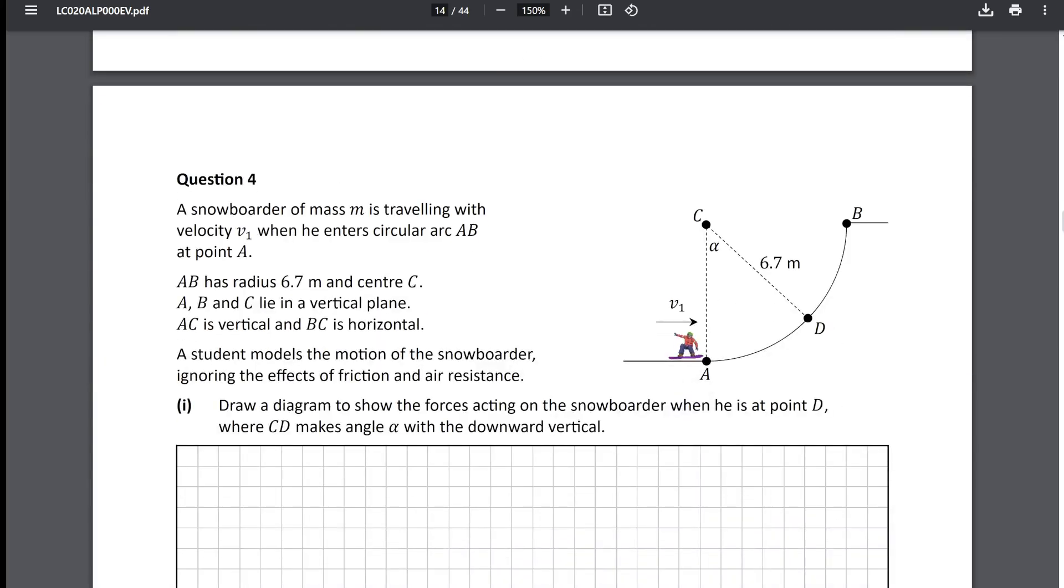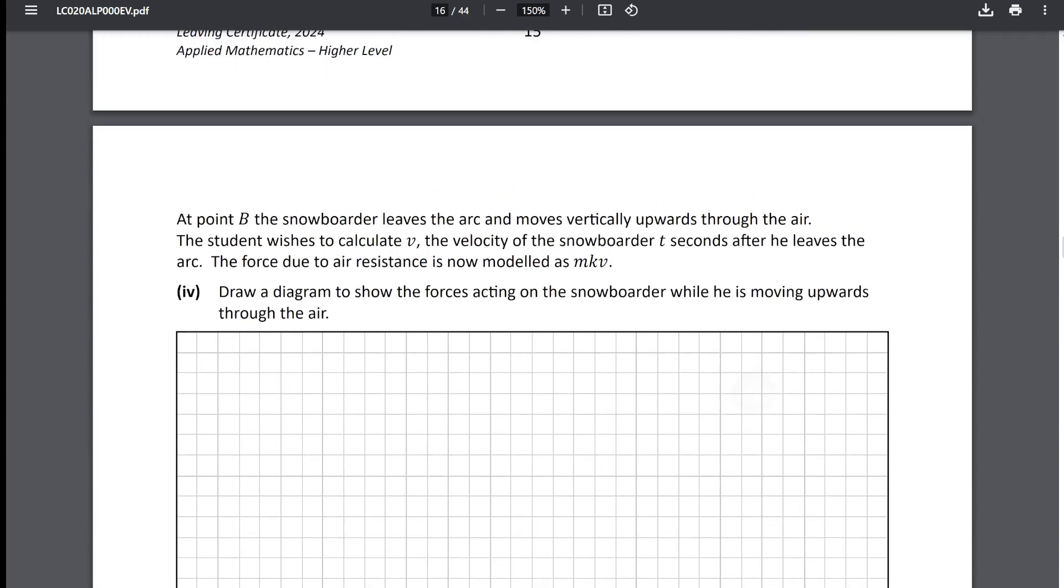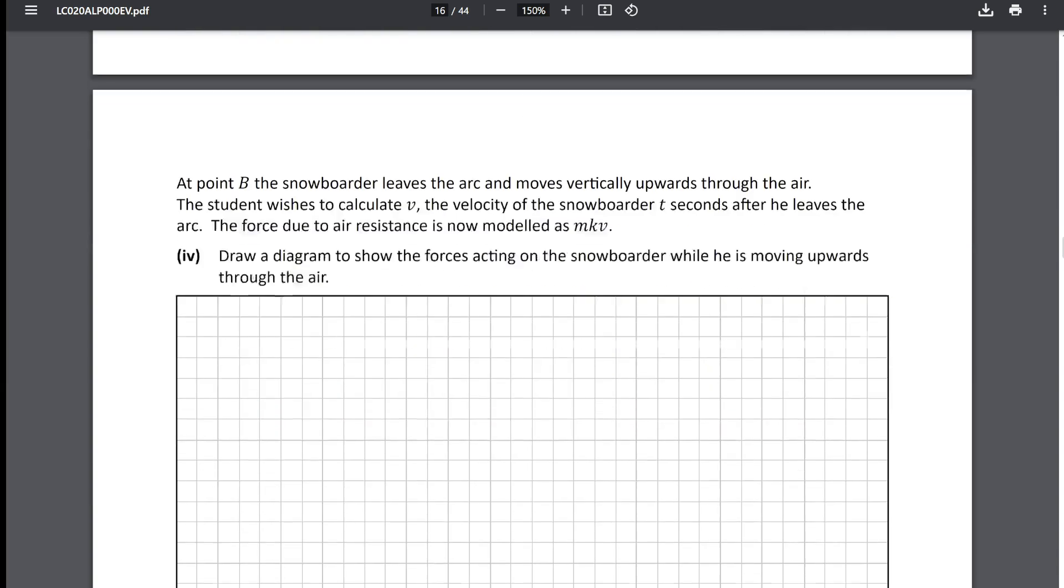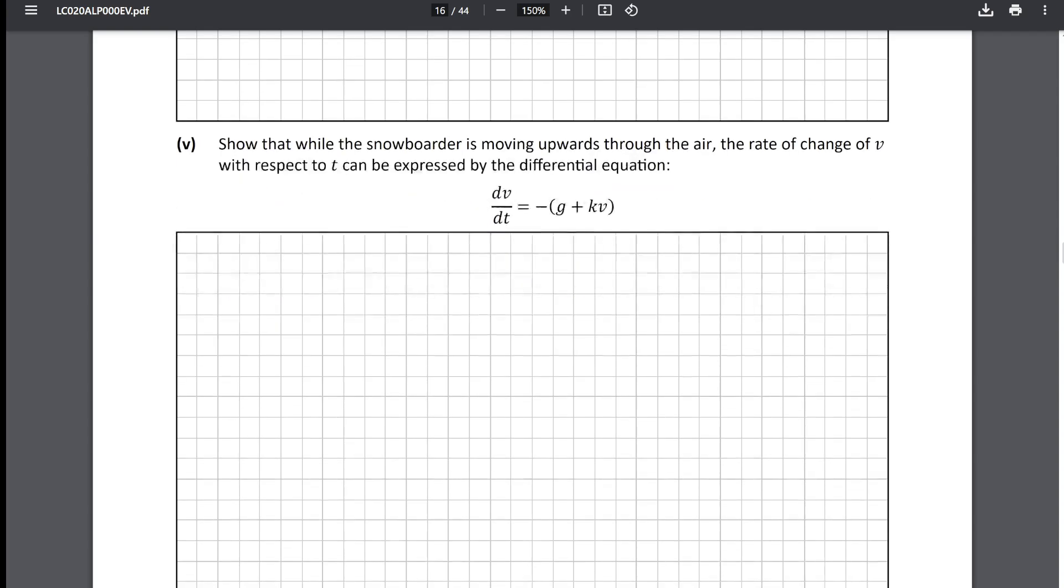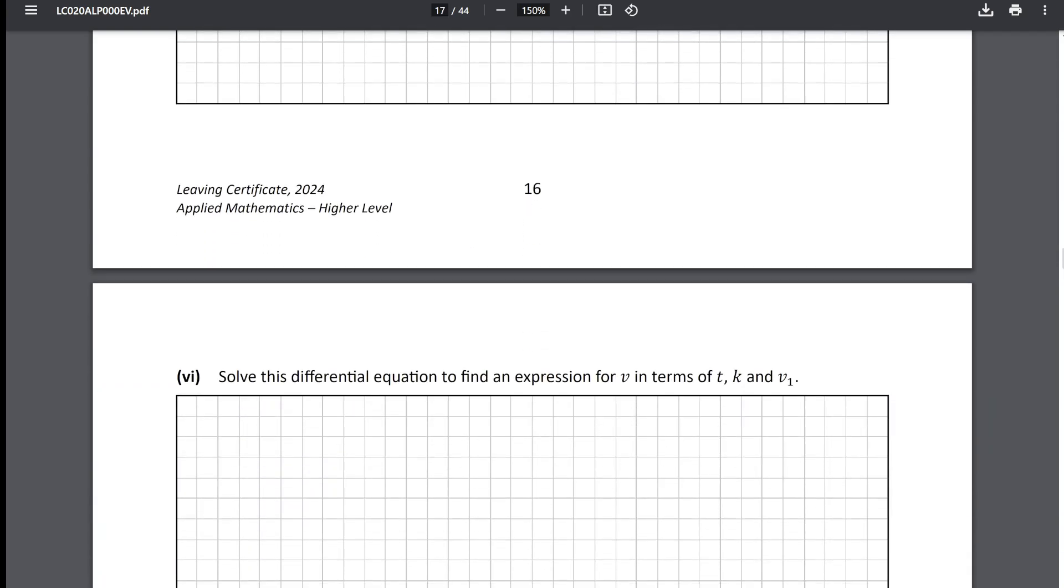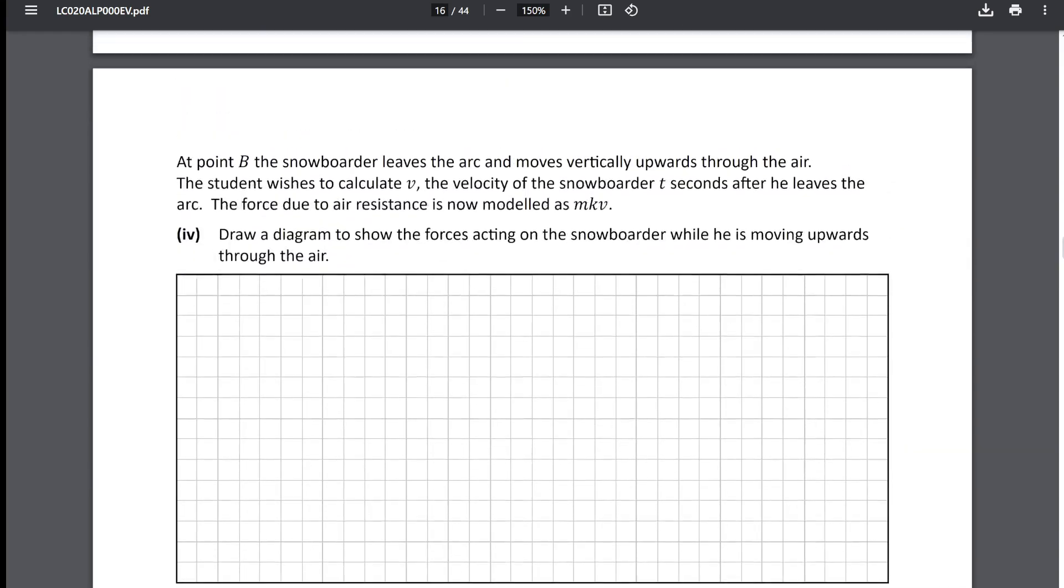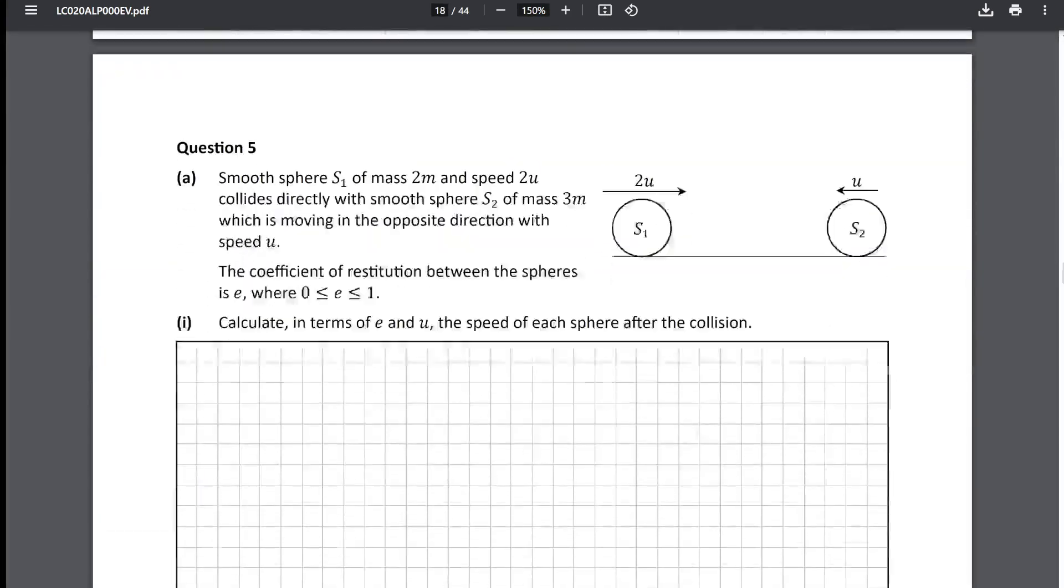Now question four, why do they have to make a circular motion question super complicated for no reason? And the amount of parts included, I think this question had six parts in it and they included circuit motion and again another differential equations question. So pretty much you had to answer at least one differential equation in the exam, you could not avoid them. And one thing here is to write it with v1 so you'd have to actually use the one from part three as well, so that's a bit weird.